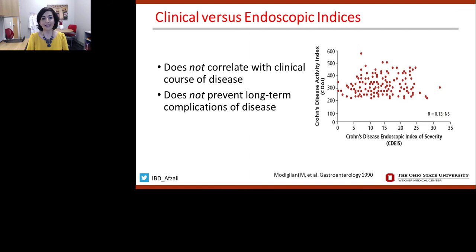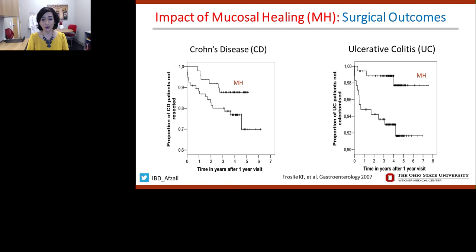This is not new. Since the early 1990s we've known that clinical outcomes do not correlate with endoscopic outcomes, nor does how a patient feels today impact what we will see over time on endoscopy — in terms of inflammation and scarring. We also know that if we achieve mucosal healing, whether for Crohn's disease or ulcerative colitis, we are able to reduce the need for surgical intervention. Patients were less likely to require surgery if mucosal healing was achieved.